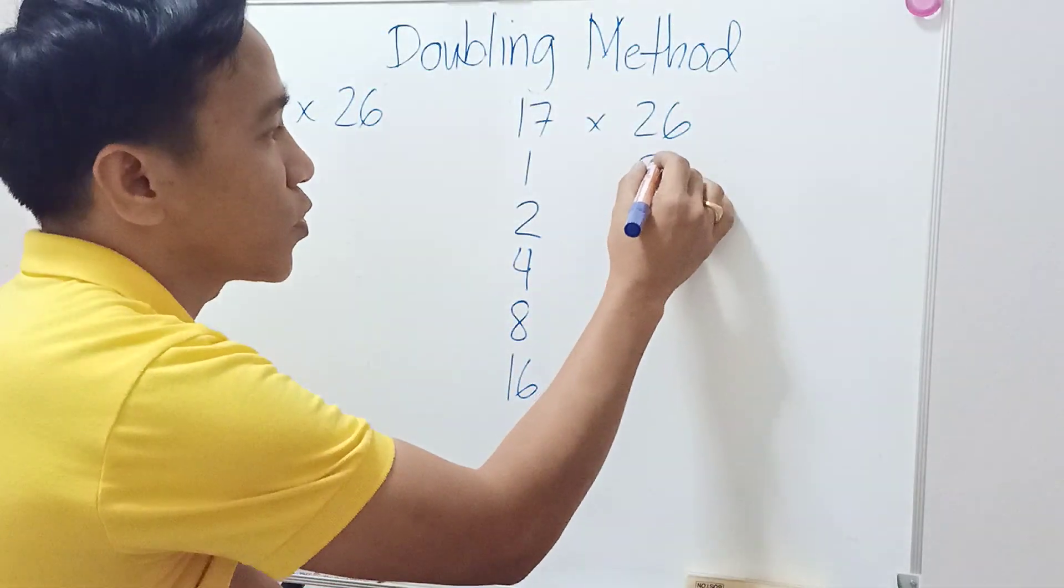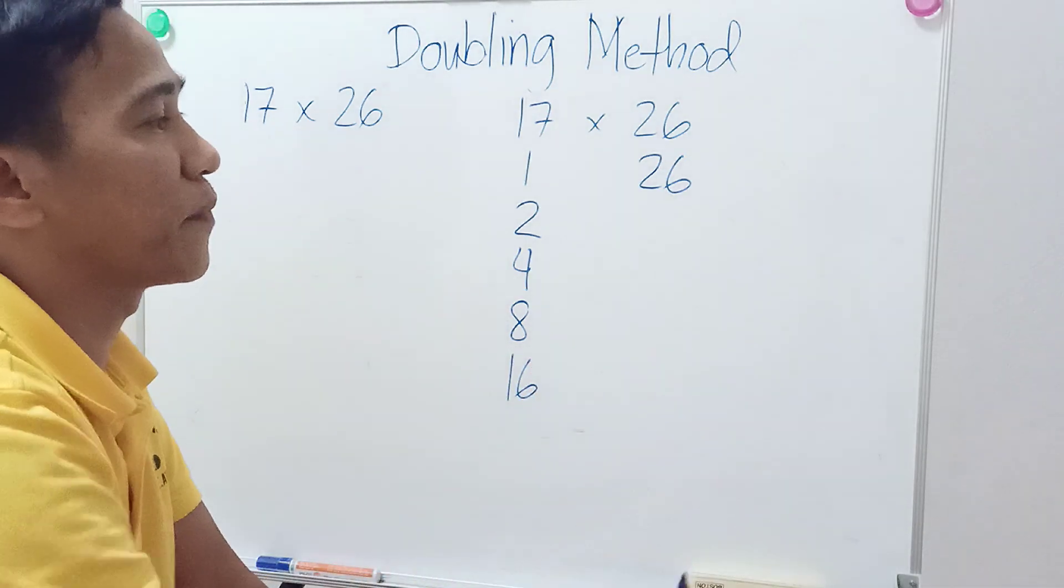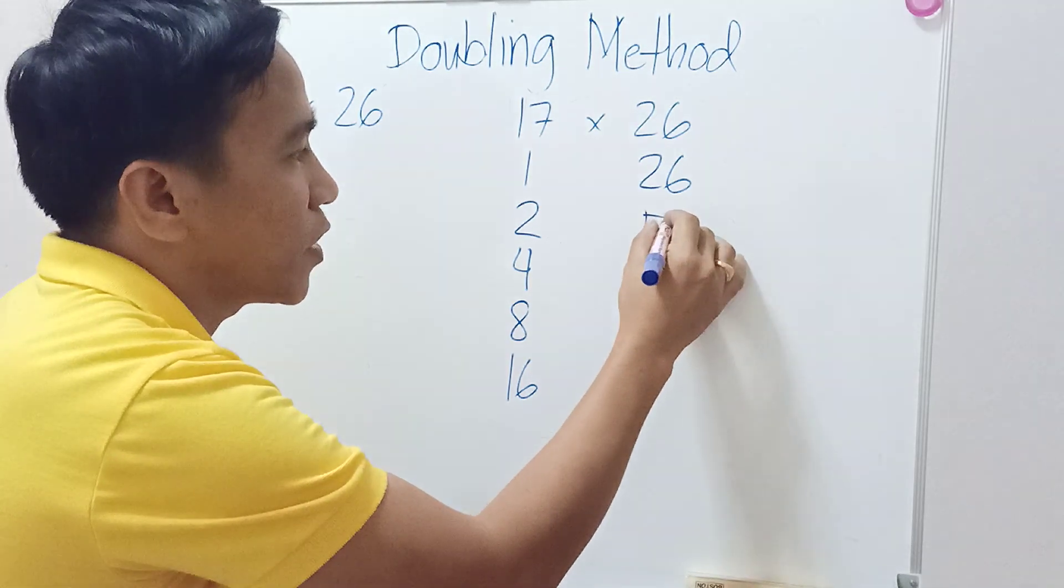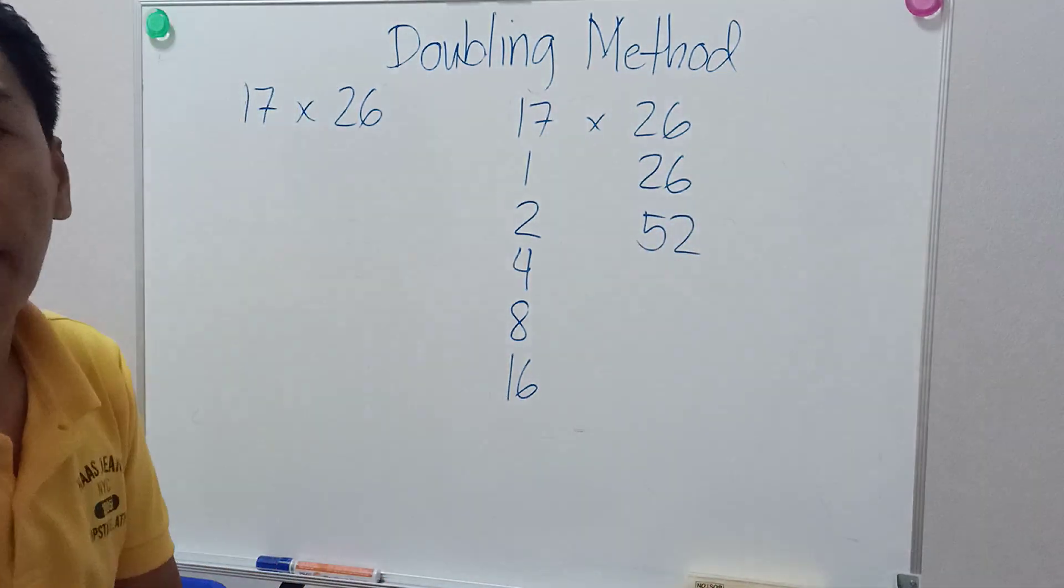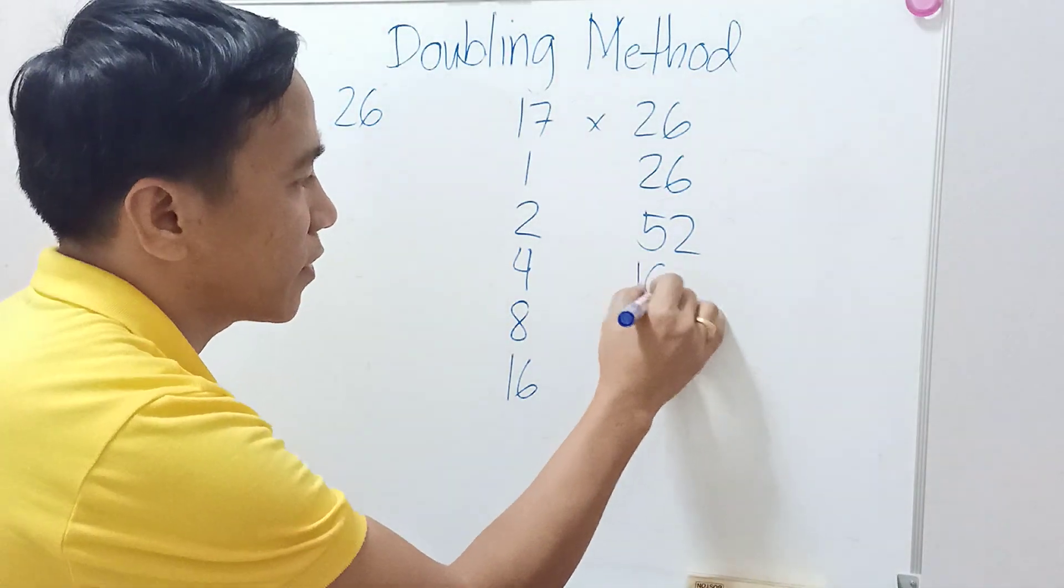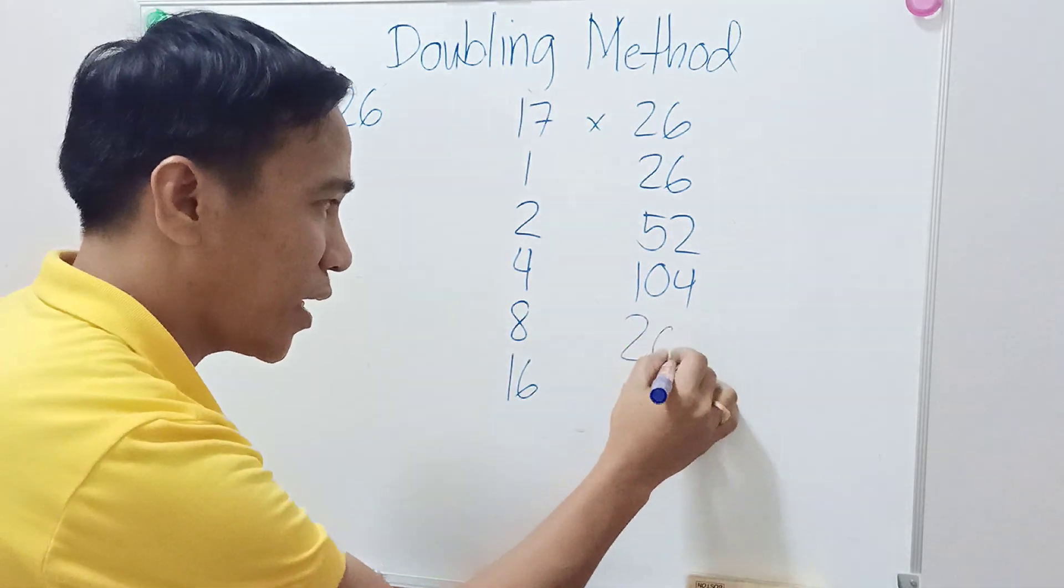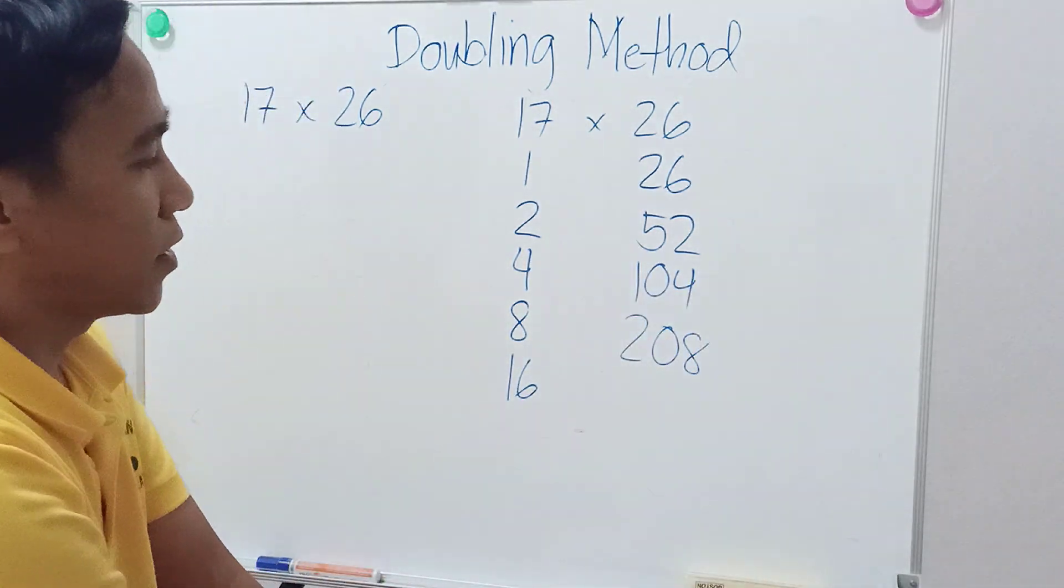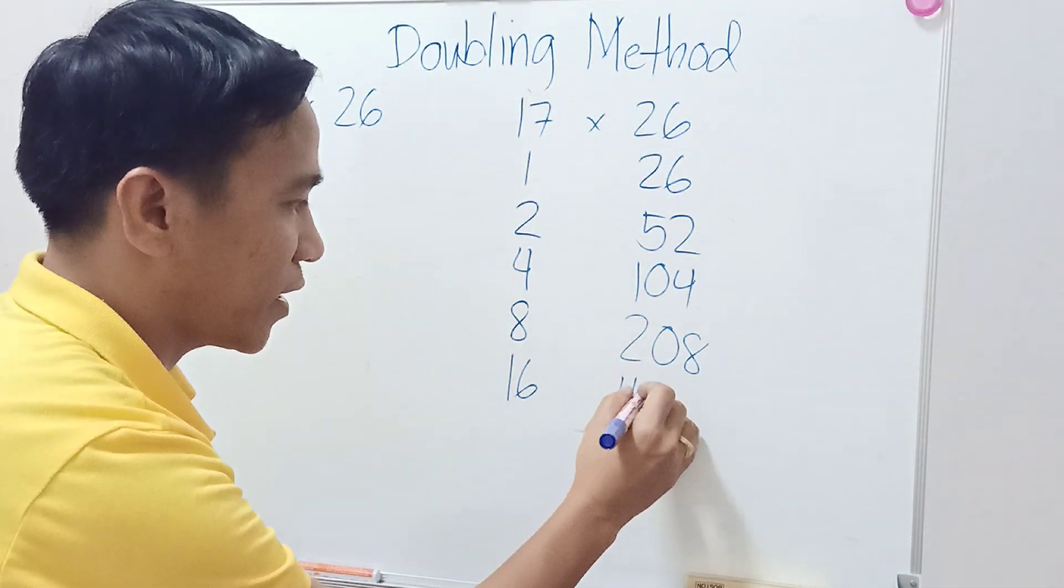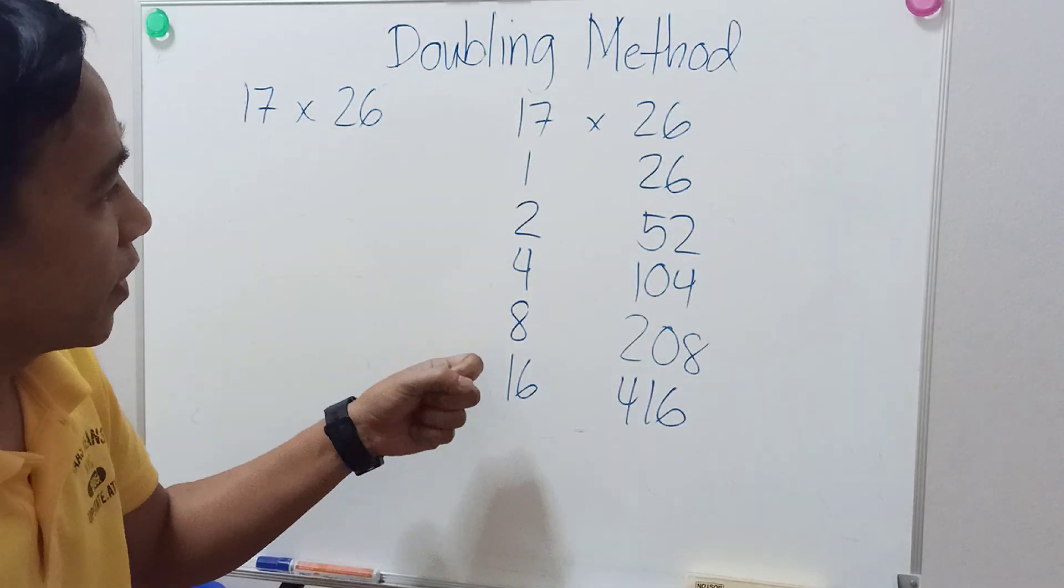You start with 26 on the right hand side, then keep on doubling it. So 26 double is 52, 52 double is 104, 104 double is 208, 208 double is 416.